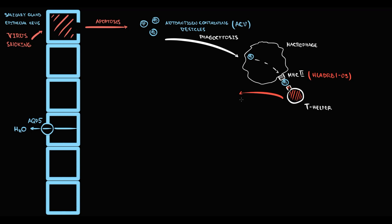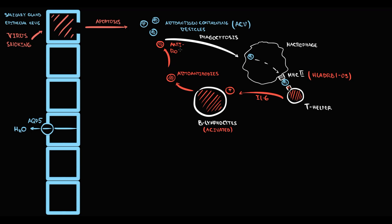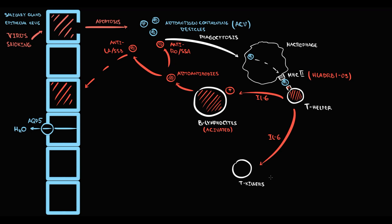Once a T helper becomes activated, it activates B lymphocytes by production of interleukin-6. When B lymphocytes become activated, they begin to produce antibodies — first anti-Ro antibodies, and also anti-La antibodies. These antibodies cause severe direct injury to epithelial cells, resulting in their destruction. Also, T helpers, by production of interleukin-6, stimulate T killers, and in their activated state T killers massively infiltrate epithelial cells, causing severe damage and destruction of those cells.